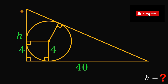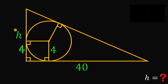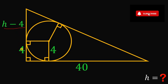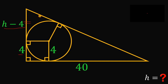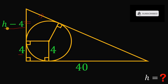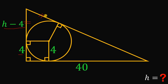We know the length of this side must equal h, and since one part is 4, the other part must equal h minus 4. So h minus 4 plus 4 gives a total of h again. Take note that these two segments — by the property of a tangent line — must be the same length. So if this length is h minus 4, the other segment must also be h minus 4.